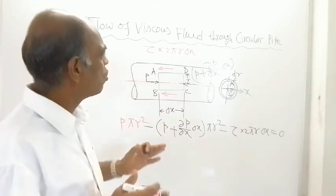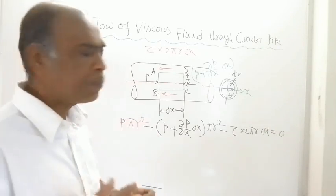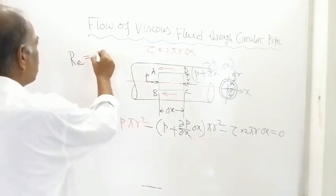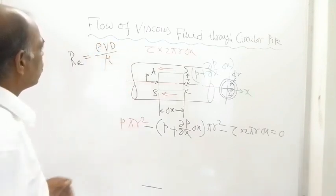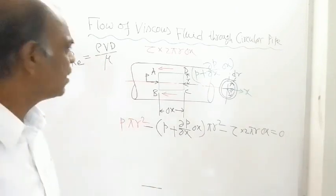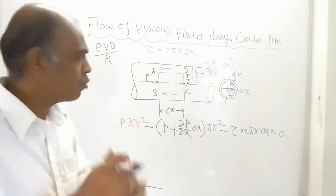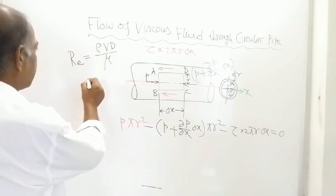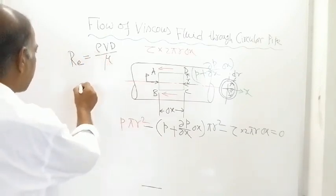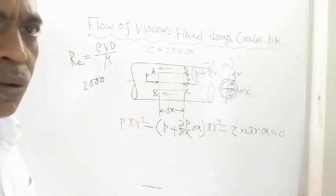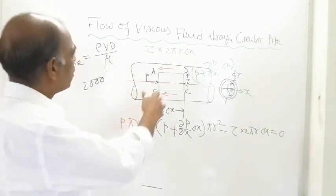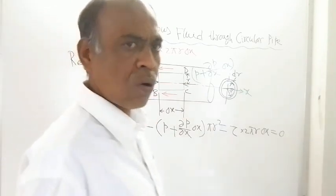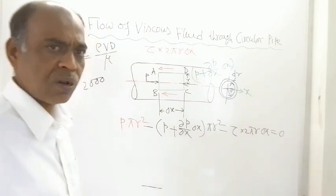One more thing: we are talking about laminar flow. For flow through circular pipes, Reynolds number is defined as Re = ρVD/μ, where ρ is density, V is average velocity, D is inner diameter, and μ is dynamic viscosity. If Re ≤ 2000, the flow is laminar and this analysis is valid.